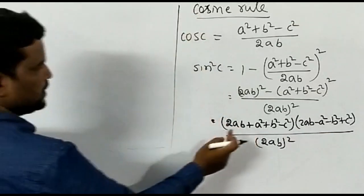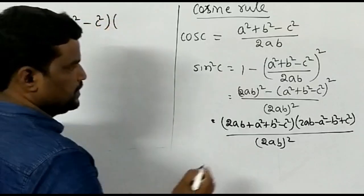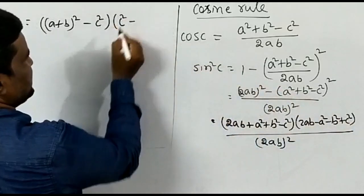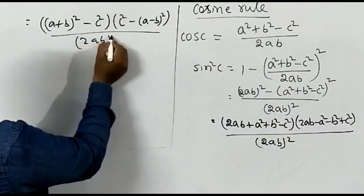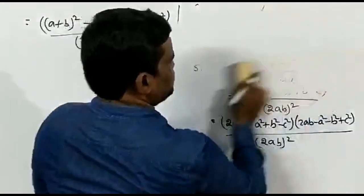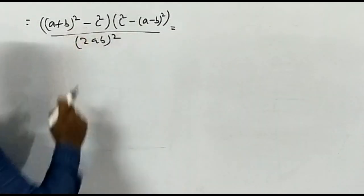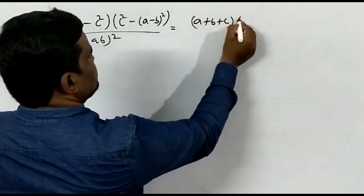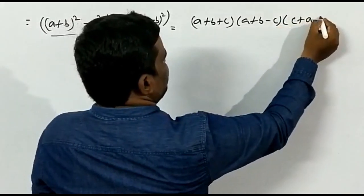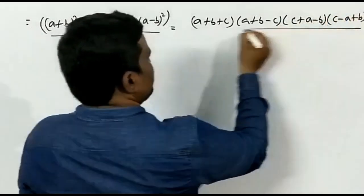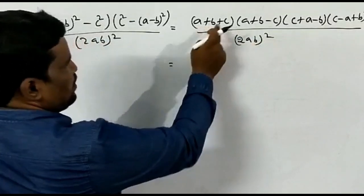Applying the identity a² − b², we factor the numerator: [2AB + (A² + B² − C²)][2AB − (A² + B² − C²)] / (2AB)². This gives: [(A+B)² − C²][C² − (A−B)²] / (2AB)².